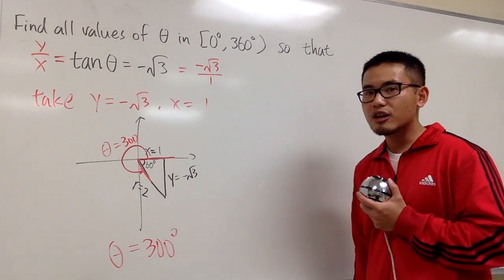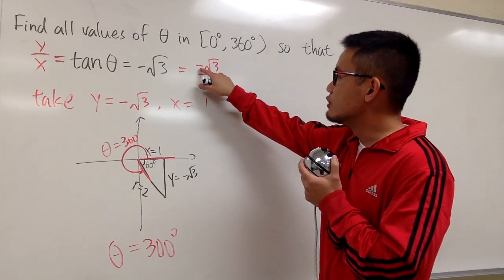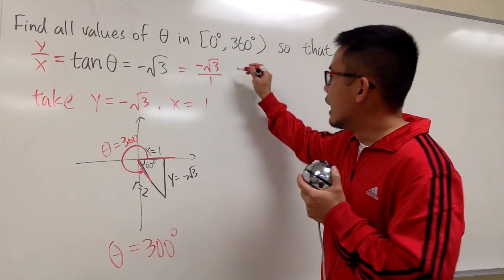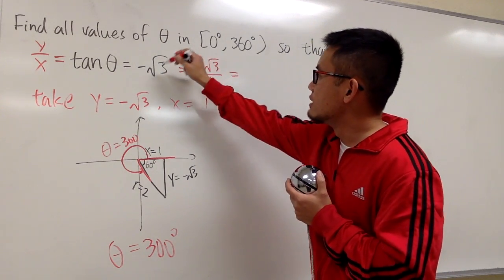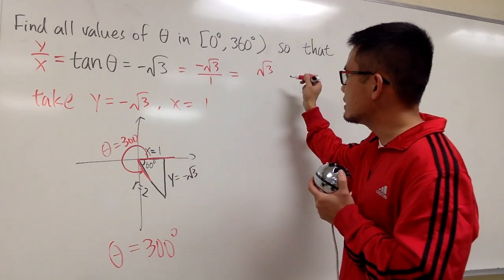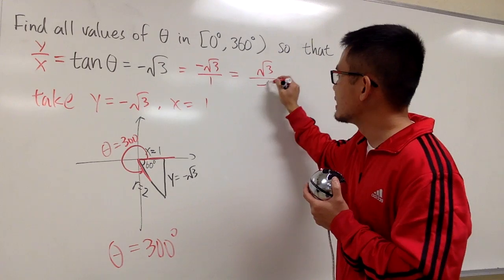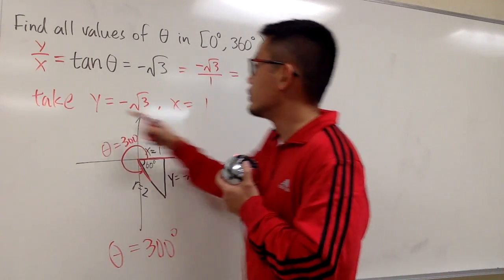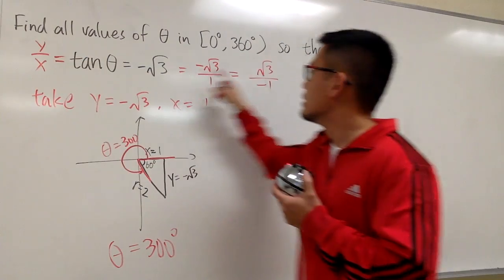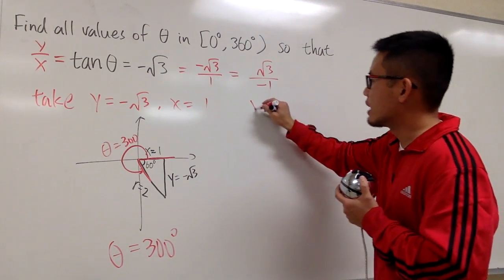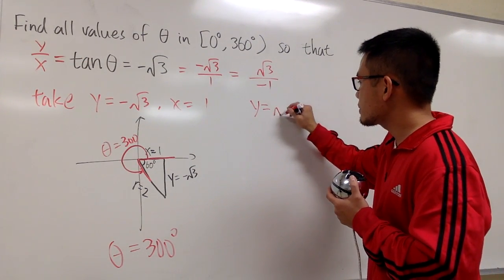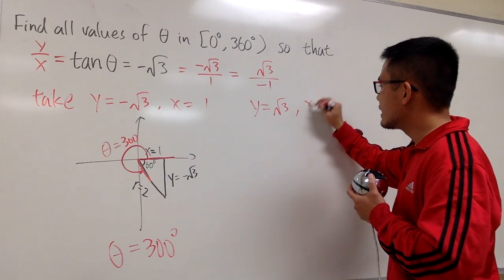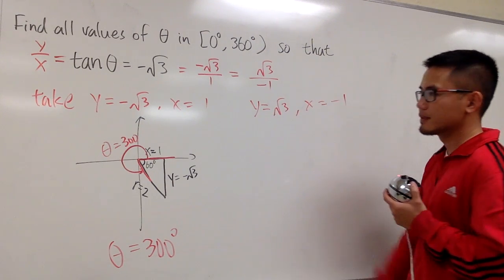We do have another answer, because earlier I just put the negative on the top. I could have written this down as √3 on the top, over -1. This way, I can take x to be -1 and y to be √3. So let's put that down: y = √3 and x = -1.